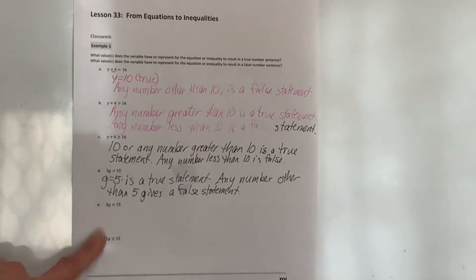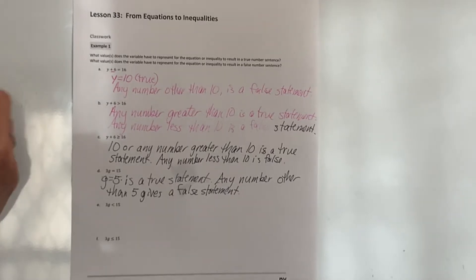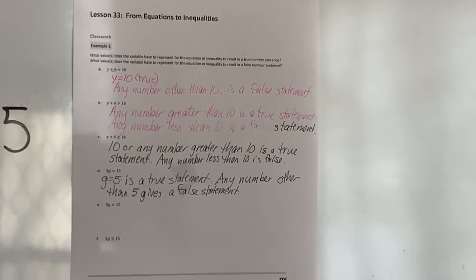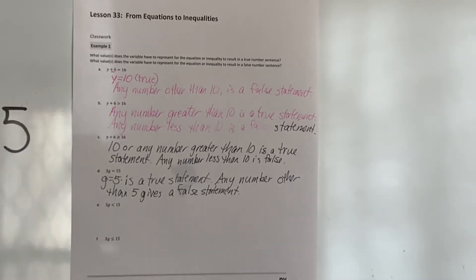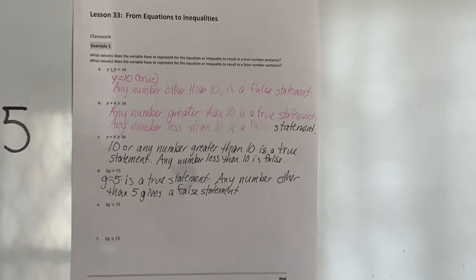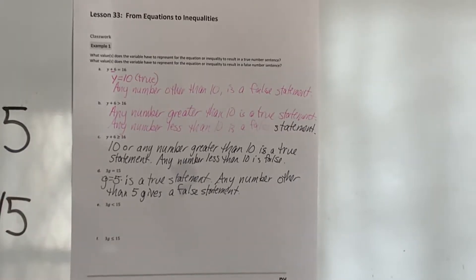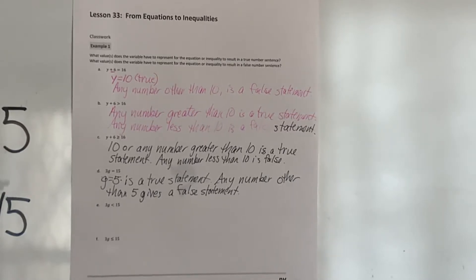Now we have 3g is less than 15 — an inequality, so we can probably have more than one answer. Would 5 work? 3 times 5 is 15, and 15 is not less than 15, so 5 does not work. What about 6? 3 times 6 is 18, not less than 15. Let's try 7: 3 times 7 is 21, not less than 15. Going higher doesn't get a correct answer.